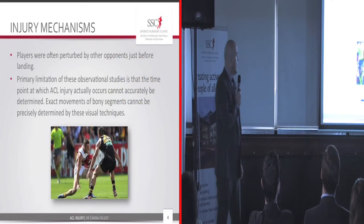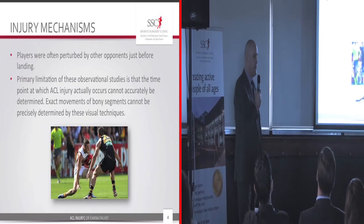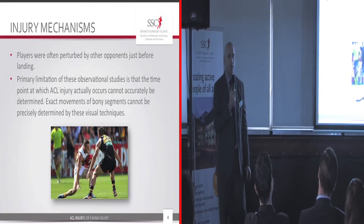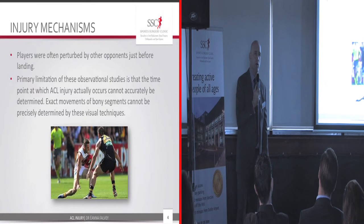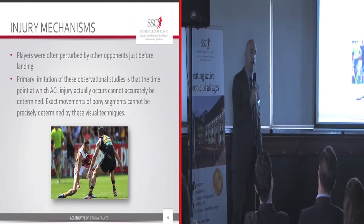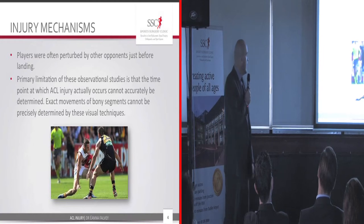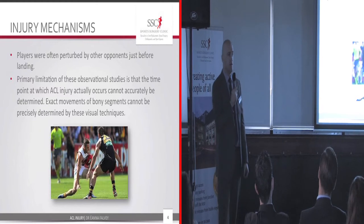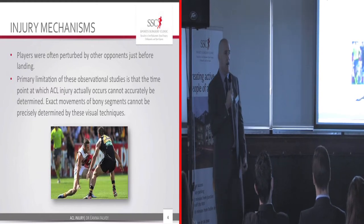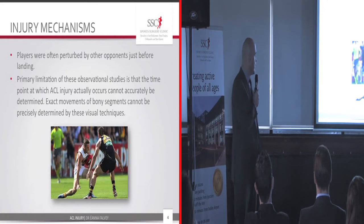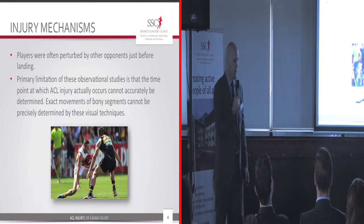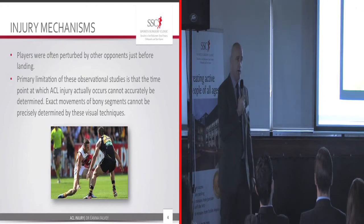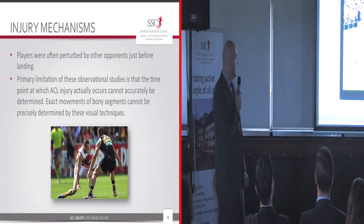Another point: players were often perturbed by their opponent just prior to landing. In a jumping-landing situation — very pertinent in GAA — if a player jumps to catch a ball, gets the smallest nudge on the way down, and then lands with the injury mechanism. One of the issues in many studies is that the players themselves could very often not really identify or quantify what had happened. So whether or not someone else was involved was a question for them.